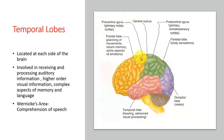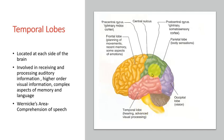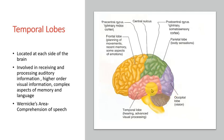Another lobe of the cerebrum is the temporal lobe. It is involved in receiving and processing auditory information, and is also responsible for higher-order visual information, complex aspects of memory, language, and understanding of language. Functions include abstract thought, judgment, and control of written and verbal language skills. The temporal lobe includes Wernicke's area, primarily responsible for comprehension of speech, and is closely linked to Broca's area, which is responsible for producing speech. Damage to this area can lead to problems with comprehension or production of speech.